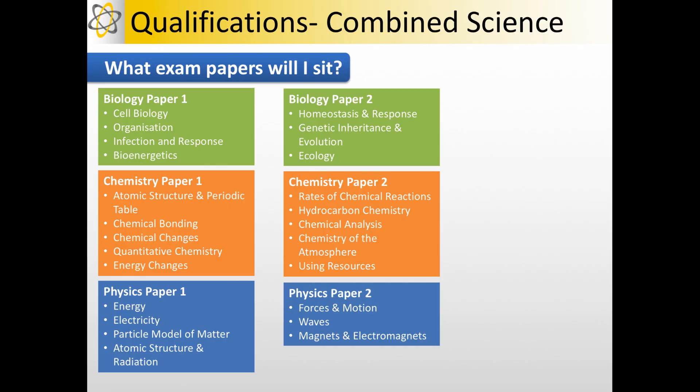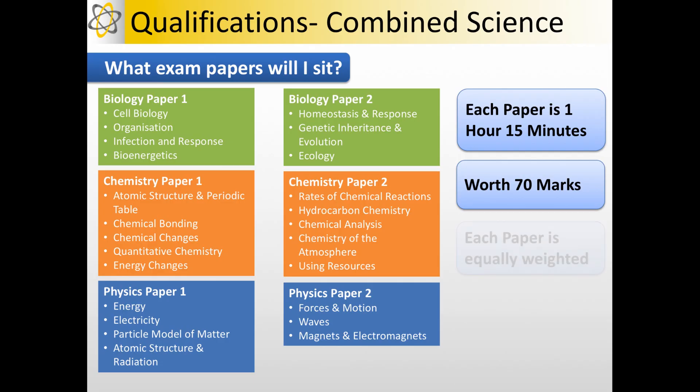If you're doing Combined Science these are the exam papers you're going to sit and the bits of content that will be in each paper. So you'll do two Biology, two Chemistry and two Physics papers. Each of the papers is 1 hour and 15 minutes in length and is worth 70 marks and each of the papers is equally weighted so they're all worth the same amount.